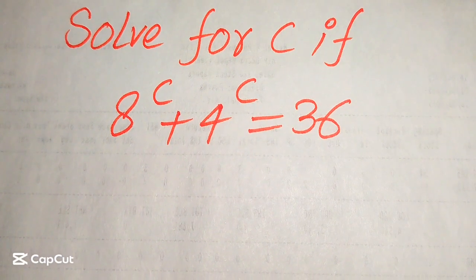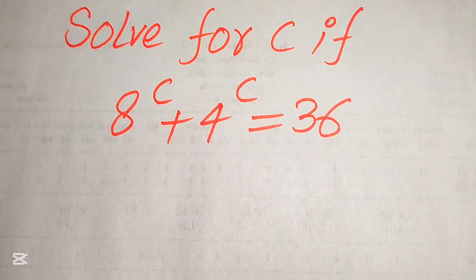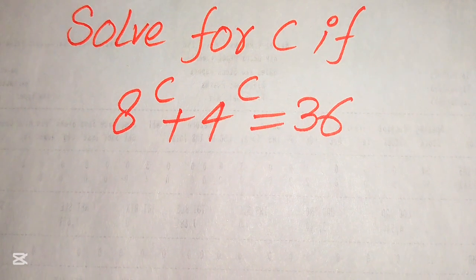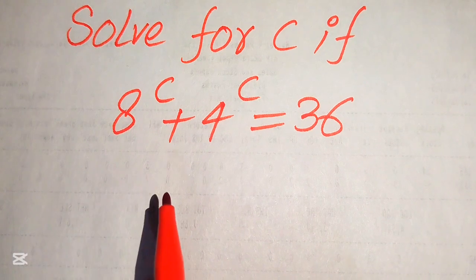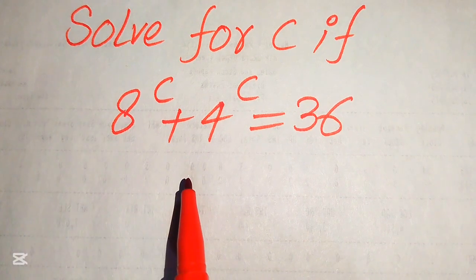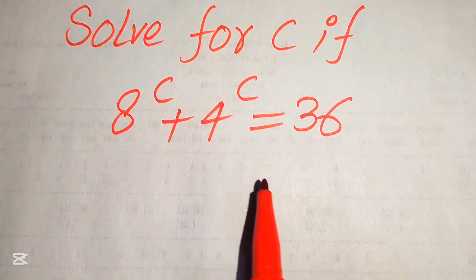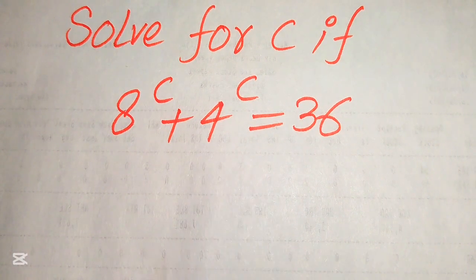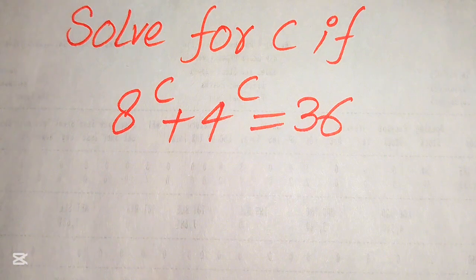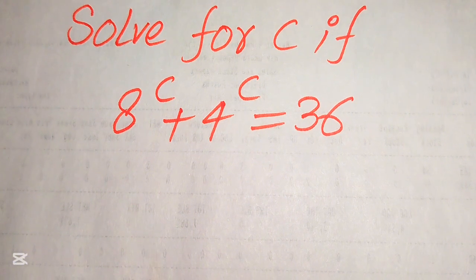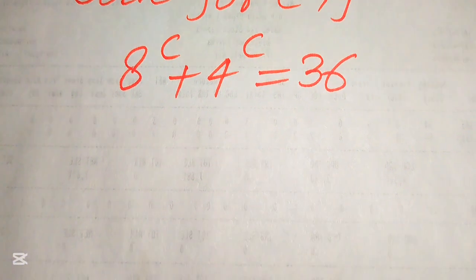Hello everyone, welcome to solve this nice math algebra problem. Here we have 8 to the power of c plus 4 to the power of c is equals to 36, and we solve this problem for the values of c.